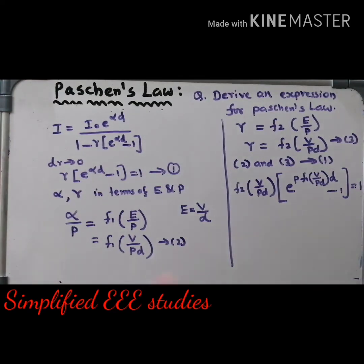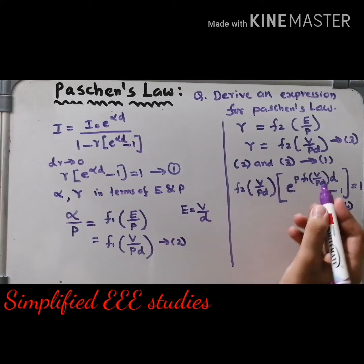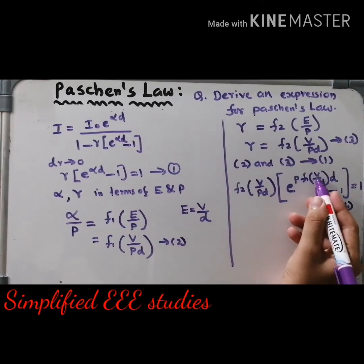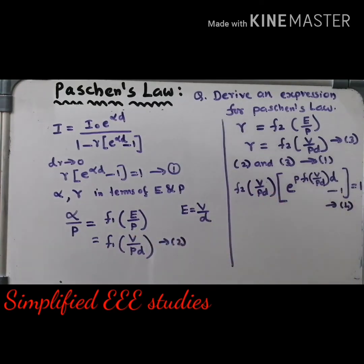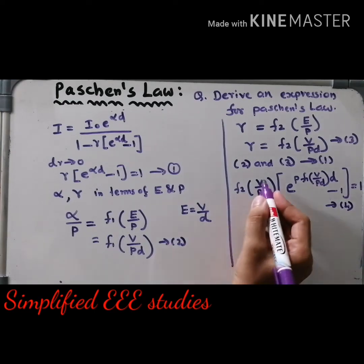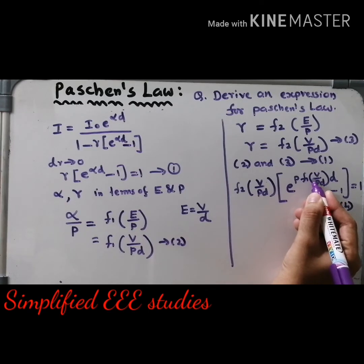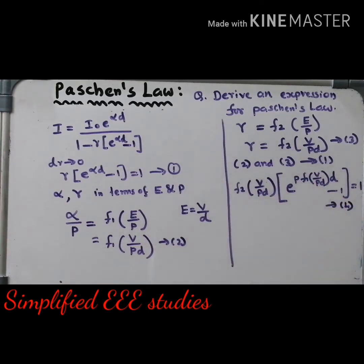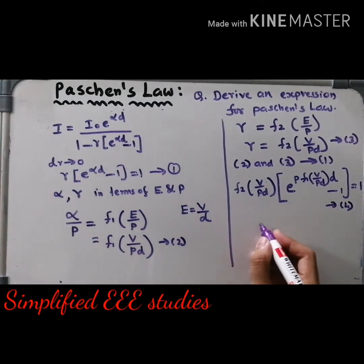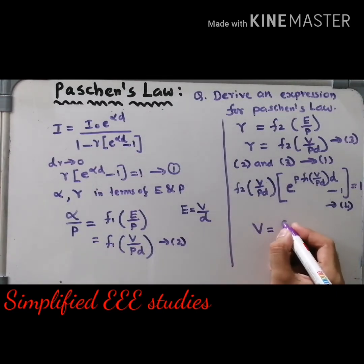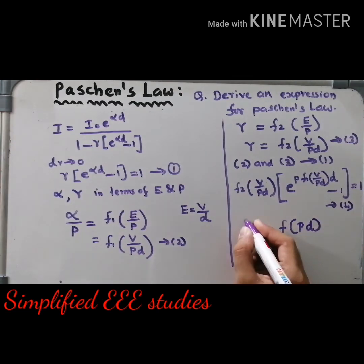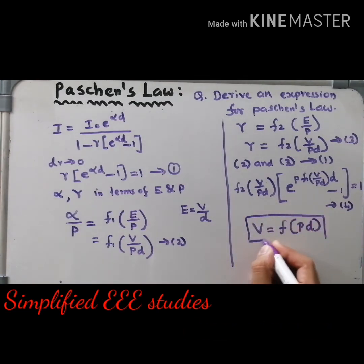Now look at the final equation number 4 very carefully. f2 of (V/p, d), and similarly e to the power p into f1 of (V/p, d). So V/p and d become a common factor throughout the equation. By looking at equation number 4, considering voltage, pressure, and distance — f1 as well as f2 — three parameters are involved: voltage and the product of pressure and distance. Therefore, voltage must be a function of the product of pressure and distance. This is known as Paschen's law or Paschen's theory.